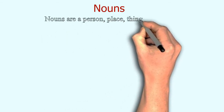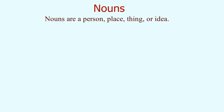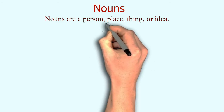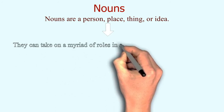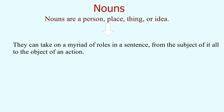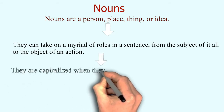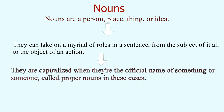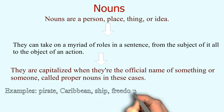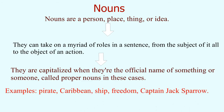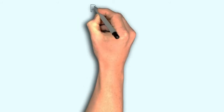The first part of speech is nouns. Nouns are basically the name of a person, place, thing, or idea. Nouns can function in different roles in a sentence depending on whether they are performing an action or an action is being done on them. Proper nouns always have their first letter capitalized — for example: pirate, Caribbean, ship, freedom, Captain Jack's.